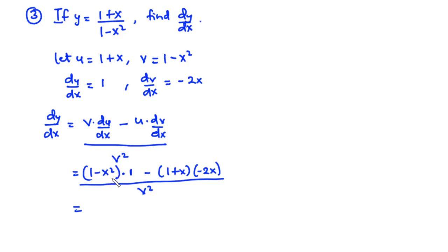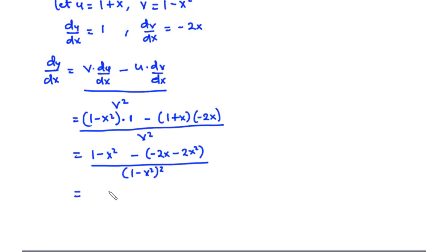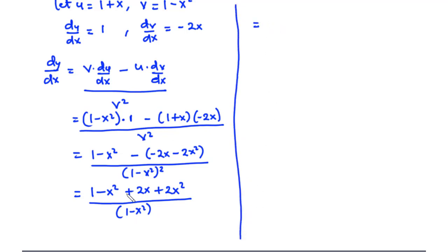Expanding the numerator: 1 times (1 minus x squared) is (1 minus x squared). Then negative 2x times 1 is negative 2x, and negative 2x times x is negative 2x squared — but since we are subtracting (1 plus x) times negative 2x, the signs flip: negative 1 times negative 2x is positive 2x, and negative 1 times negative 2x squared is positive 2x squared. So combining: negative x squared plus 2x squared is x squared, giving x squared plus 2x plus 1, divided by (1 minus x squared) squared.